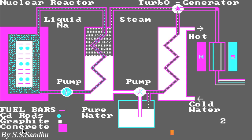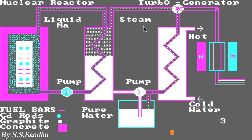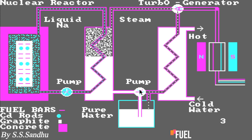Nuclear reactors are used at nuclear power plants for electricity generation and in marine propulsion. The reactors are the heart of a nuclear power plant. It works on controlled nuclear chain reactions that produce heat through a physical process called fission. That heat is used to make steam that spins a turbine to create electricity.